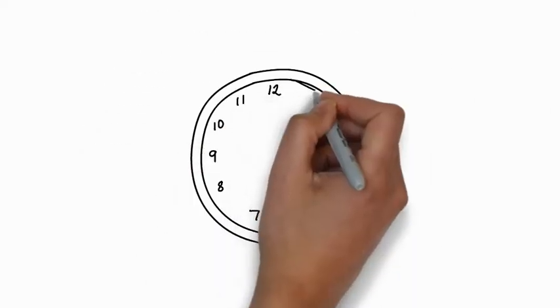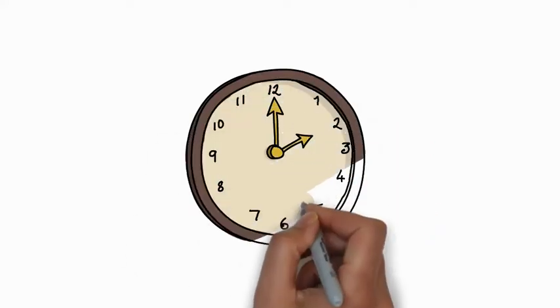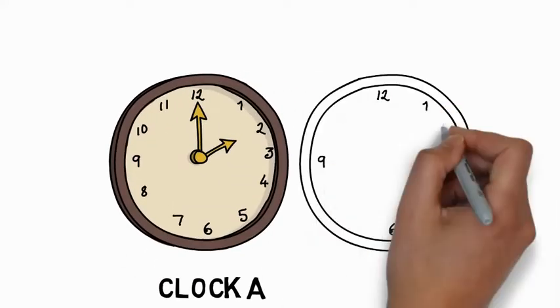According to relativity, clocks within gravitational wells run slower than clocks that are outside of gravitational wells.